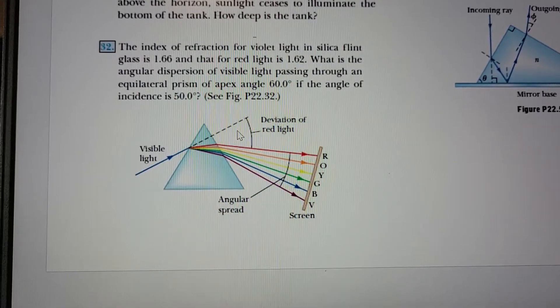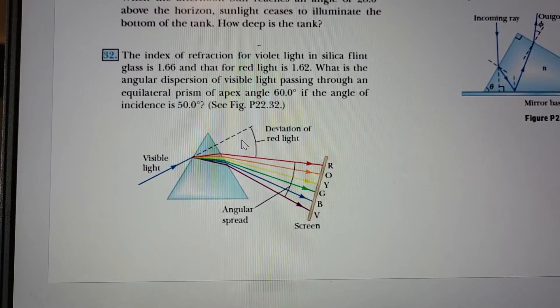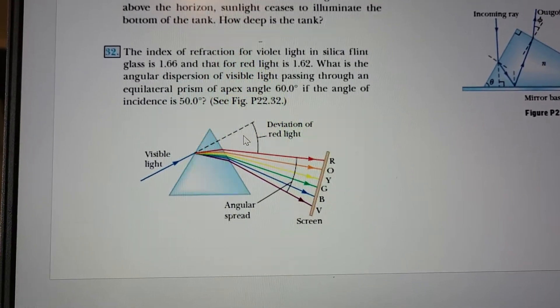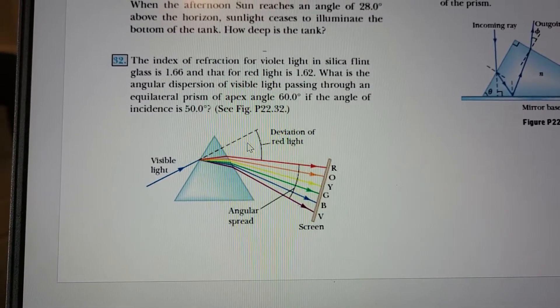Okay, so now we're going to work on this problem. The index of refraction for violet light in silica-flint glass is 1.66, and that for red light is 1.62.